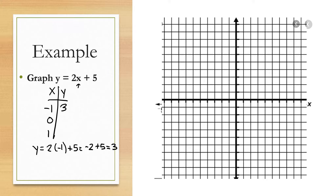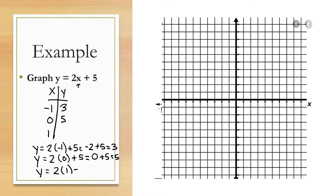Plugging in 0 for x gives me 2 times 0, which is 0, plus 5, which equals 5. And then finally, plugging in 1 for x gives me 2 times 1 plus 5. 2 times 1 is 2, plus 5 gives me 7.